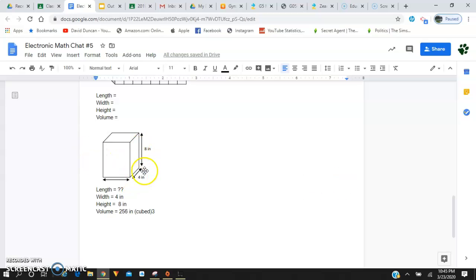We know that the width is 4. The height is 8. We don't know what the length is. But I do know that 8 times 4 times something else times that length is going to give me a total volume of 256 inches cubed. Now, it does say inches right here. That's how I know the unit we're working with is inches.